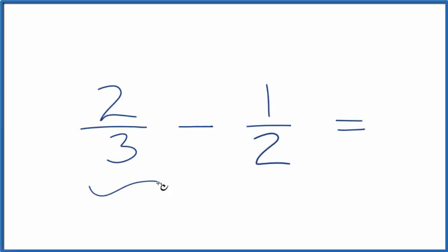Let's subtract the fractions two-thirds minus one-half. What we're trying to do is figure out if we have 2 over 3 minus 1 over 2, what is the fraction that we end up with?